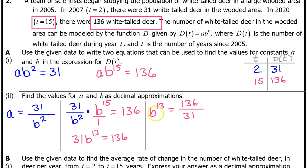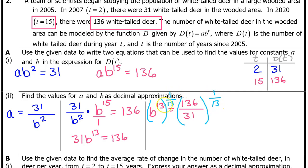We need to get b completely by itself. We can cancel out the 13 by raising both sides to the 1 over 13 power. When you raise a power to a power, you multiply, and 13 times 1 over 13 is 1, so these cancel each other out, leaving simply b. This problem is calculator active.